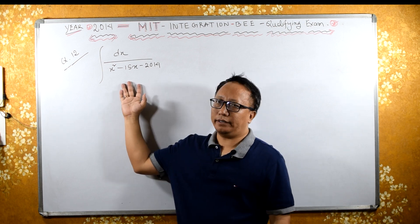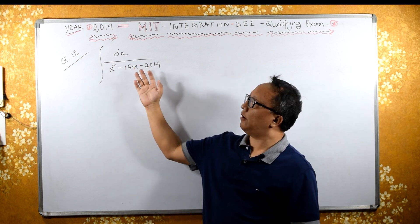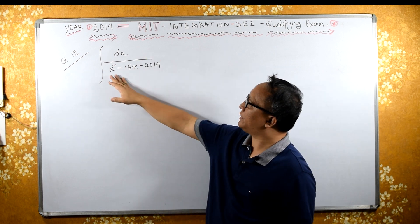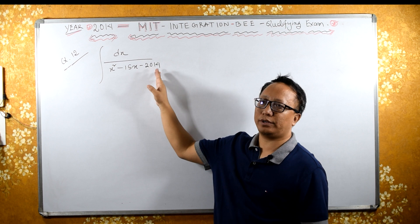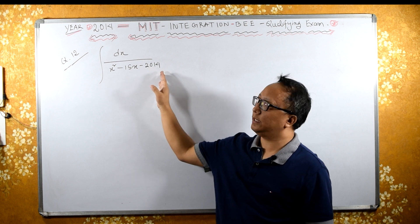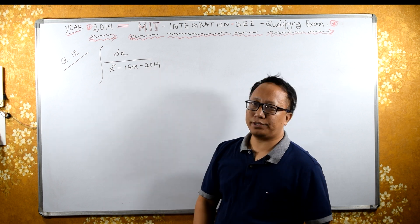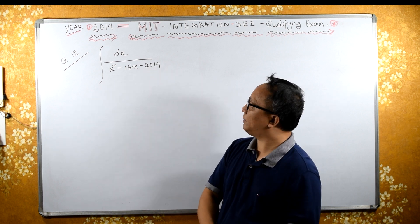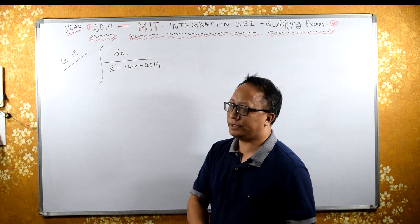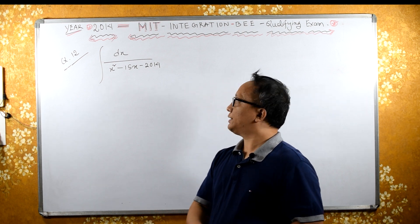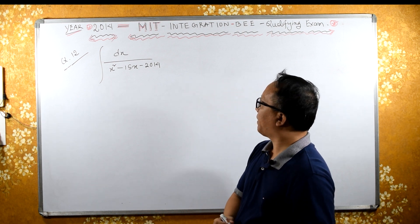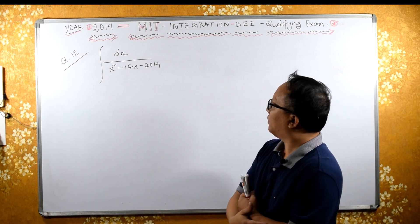Look at this integral — integral of 1 upon x squared minus 15x minus 2014. This is question number 12 for integration, MIT integration B, 2014.